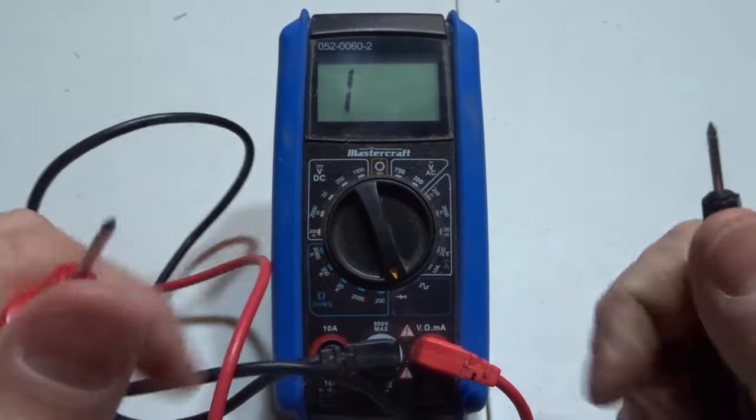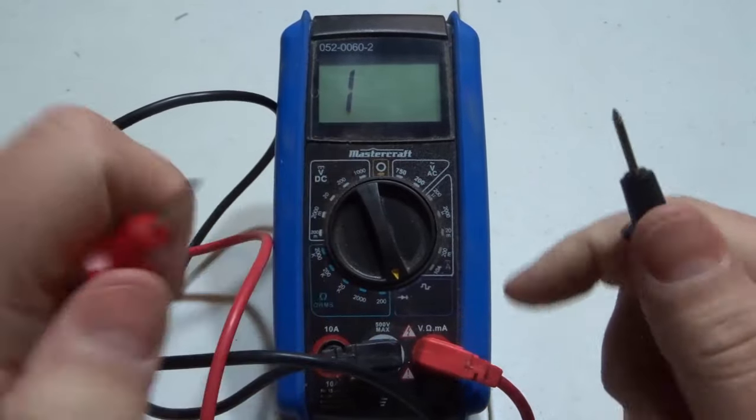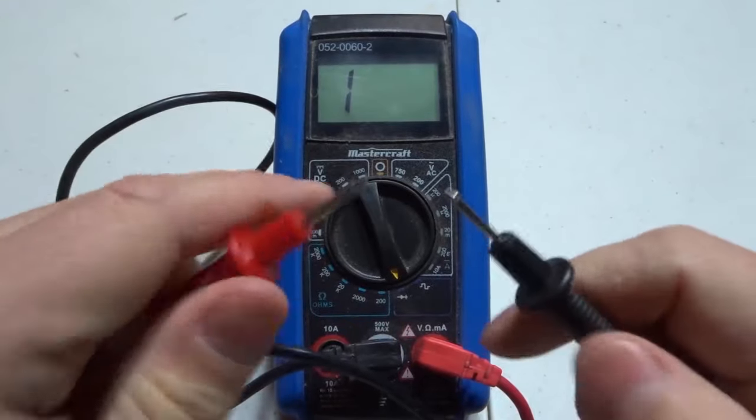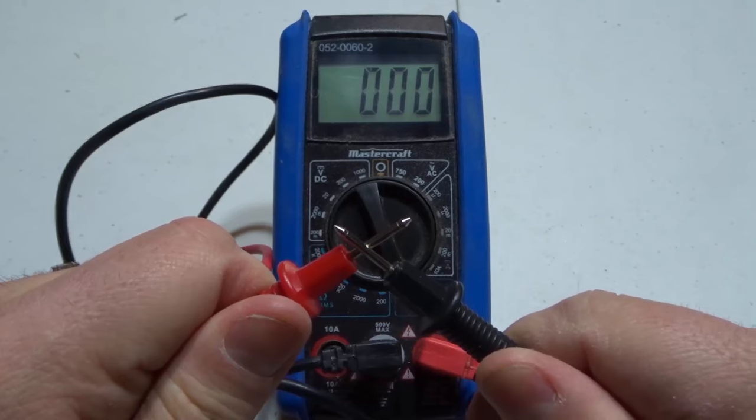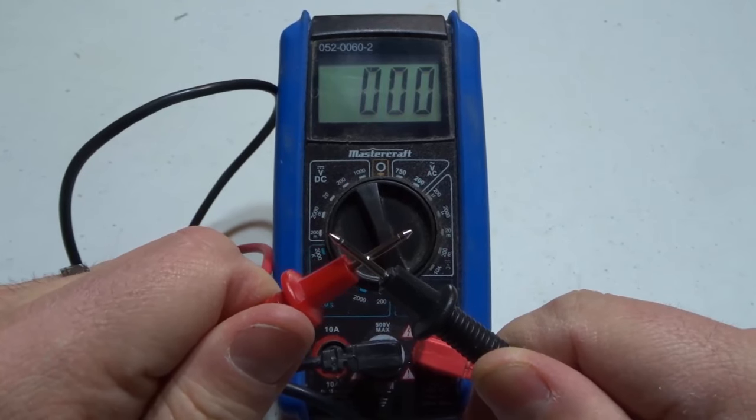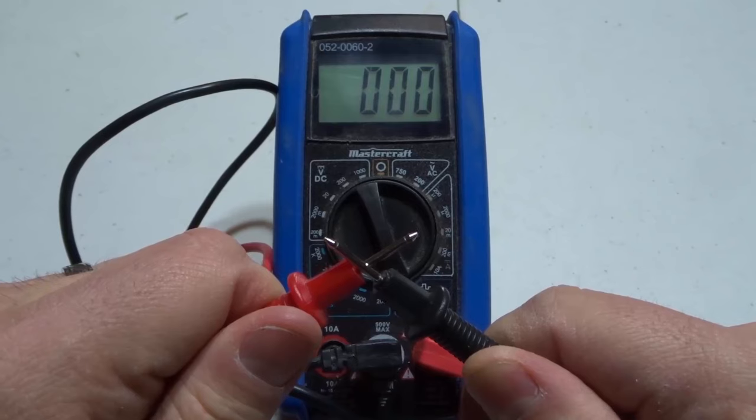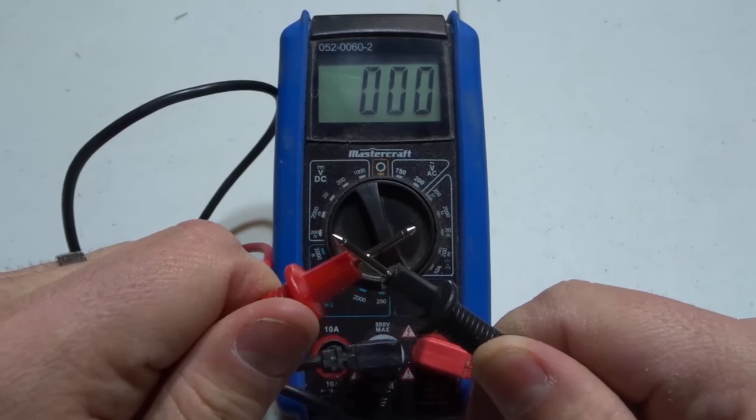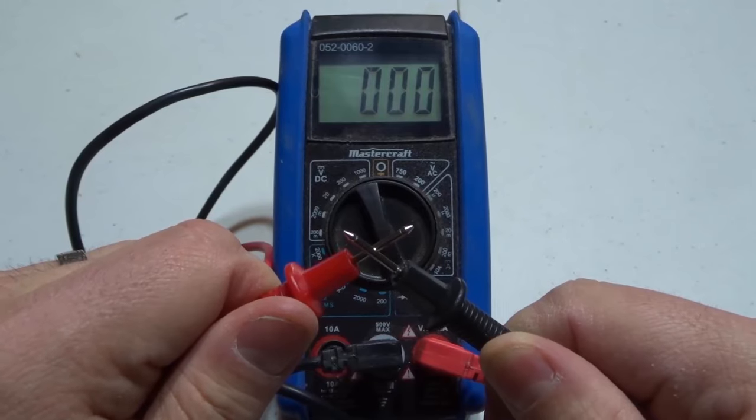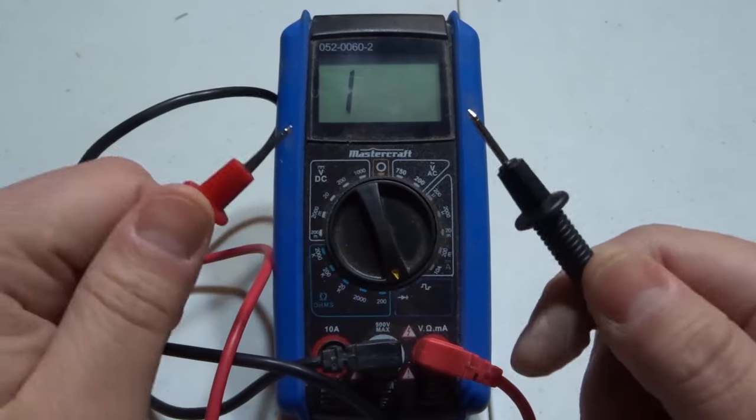Now you want to take the two probes and make sure that it works. You can see the reading is at one which means no continuity right now. Now we're going to take the two probes, put them together. As you can see we're getting a reading of zero which means that there is continuity. Even if you get a different number that will mean that there's continuity, but there's some other things you should know about and I'll explain that in a minute.